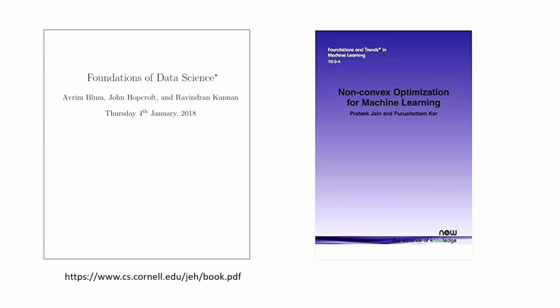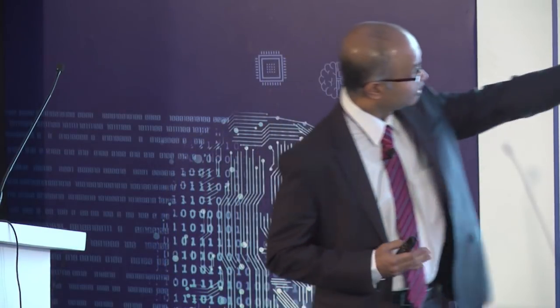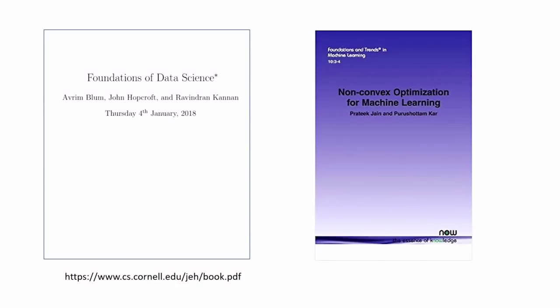I'll start by advertising two books written by colleagues of mine. One is by Ravi Kannan together with Avrim Blum and John Hopcroft — a free copy can be downloaded from Hopcroft's page at Cornell. It's a very nice book covering the mathematical foundations of data science and machine learning, ranging from high-dimensional spaces to Bayesian networks, random walks, and the mathematical foundations of supervised and unsupervised learning. It's now being used all over the world to teach the mathematical foundations of AI. The other is a more recent book by Pratik Jain and Purushottam Kar — a monograph on non-convex optimization that just came out last month in the Foundations and Trends of Machine Learning series.